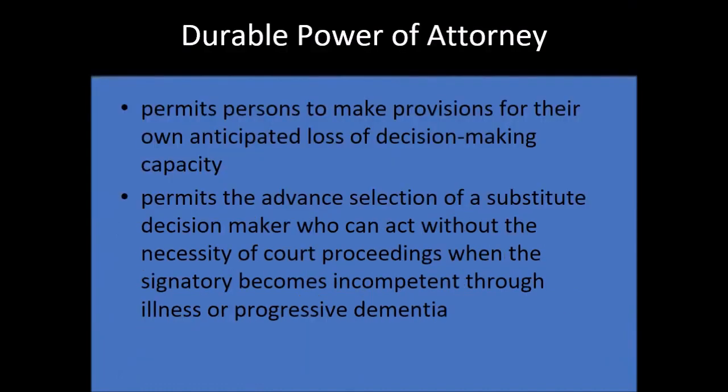With regards to durable power of attorney, this permits persons to make provisions for their own anticipated loss of decision-making capacity. For example, a patient with dementia who is still lucid at the time may decide that if and when he or she later becomes incapable of making decisions, he or she is selecting a substitute decision-maker on his or her behalf.